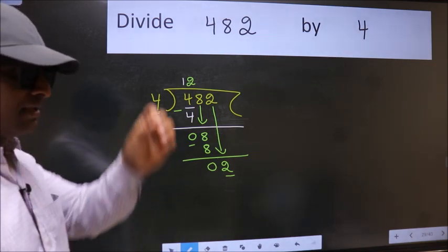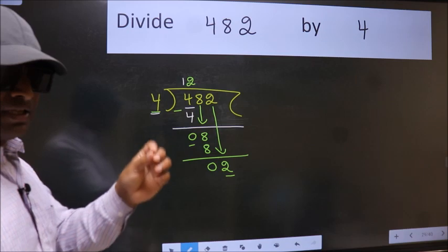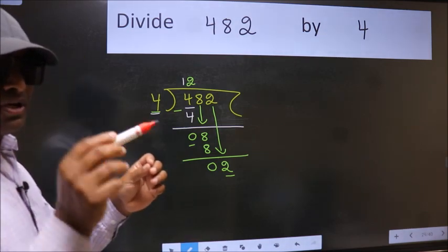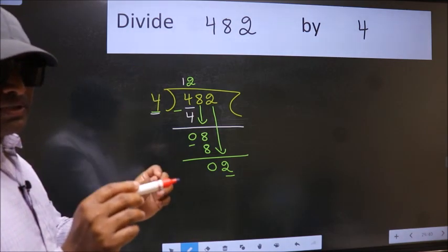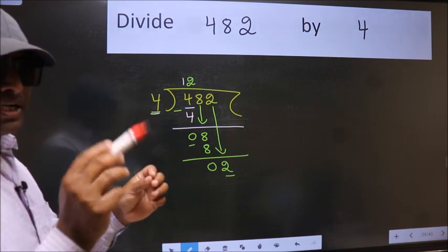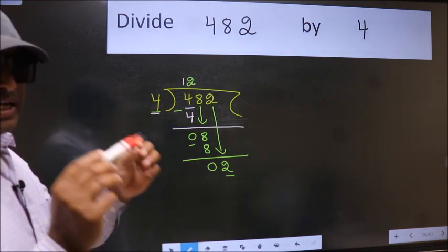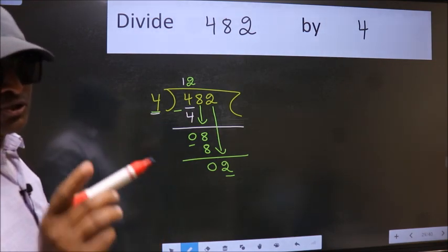I repeat: bring down the number and also put a dot and take 0, both at the same step. You should not do this.